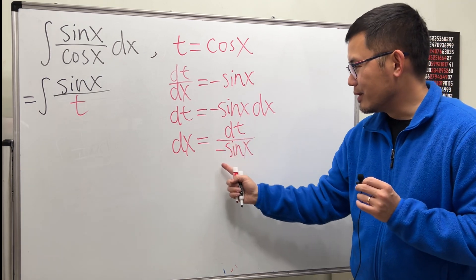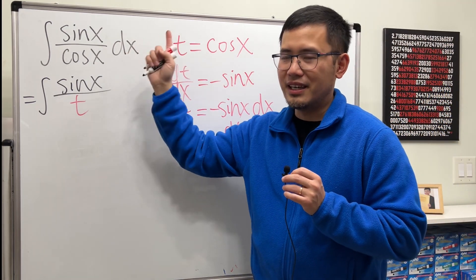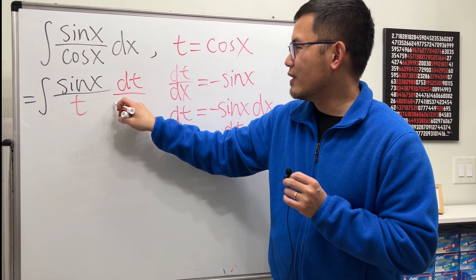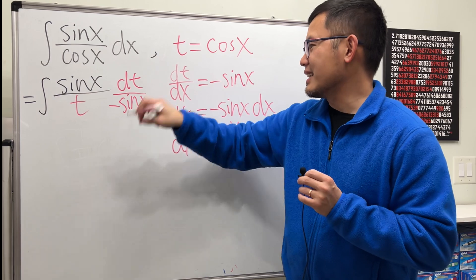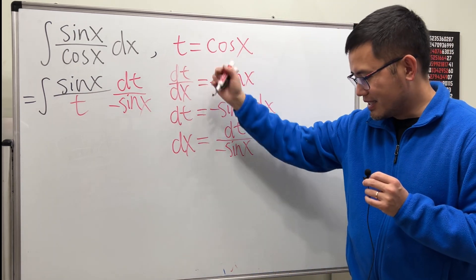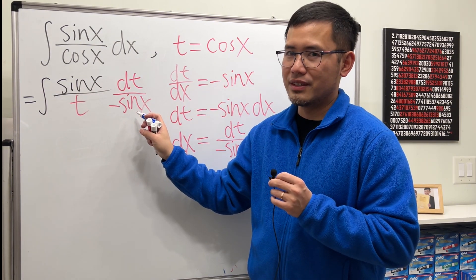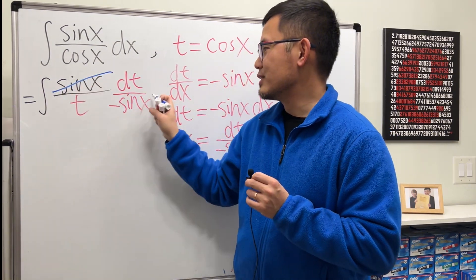Now, we can use this to replace dx. So, we will get dt over negative sin x. Have a look. What happens? Here we have the sin x, and then here we have the sin x on the bottom. So, they cancel it out.